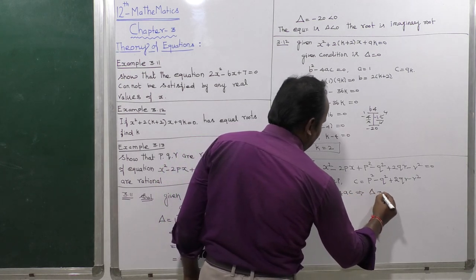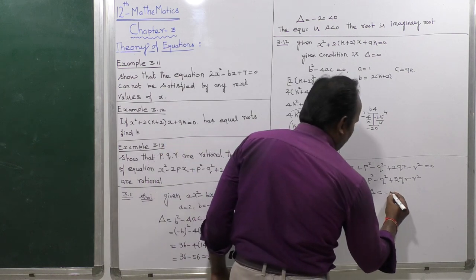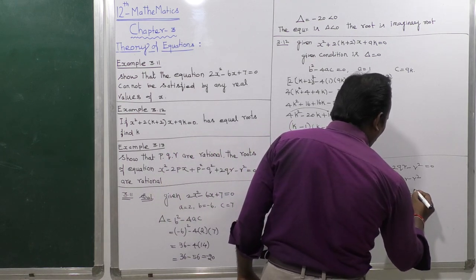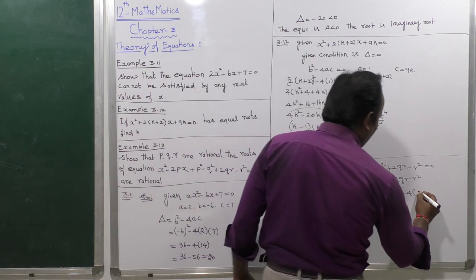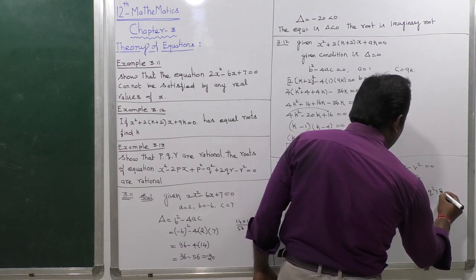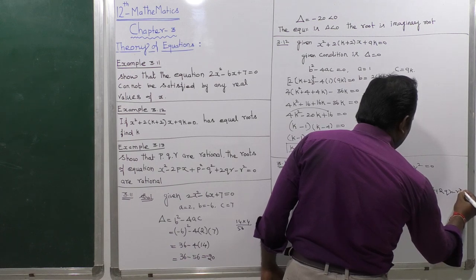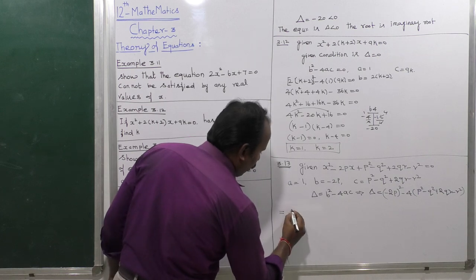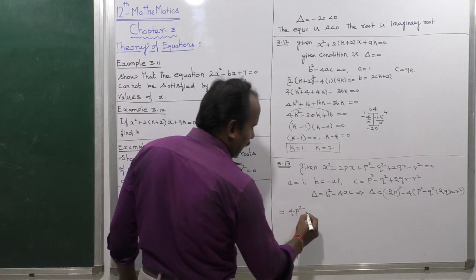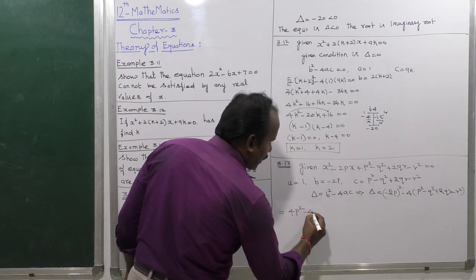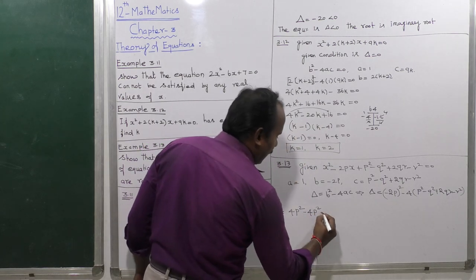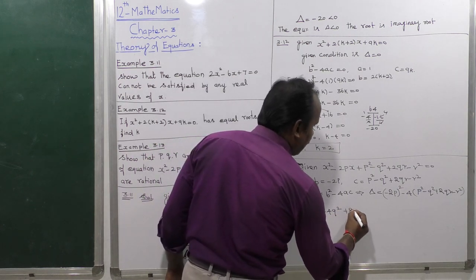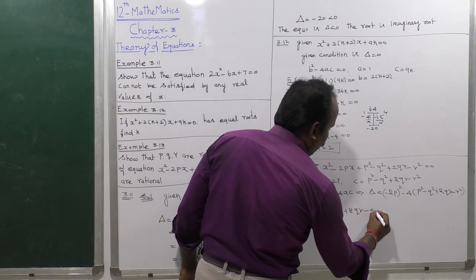We need to show that p, q, r are rational roots. Computing delta: delta equals b squared minus 4ac, which equals minus 2p the whole square, minus 4 into (p squared minus q squared plus 2qr minus r squared). This gives 4p squared minus 4p squared plus 4q squared plus 8qr minus 4r squared.